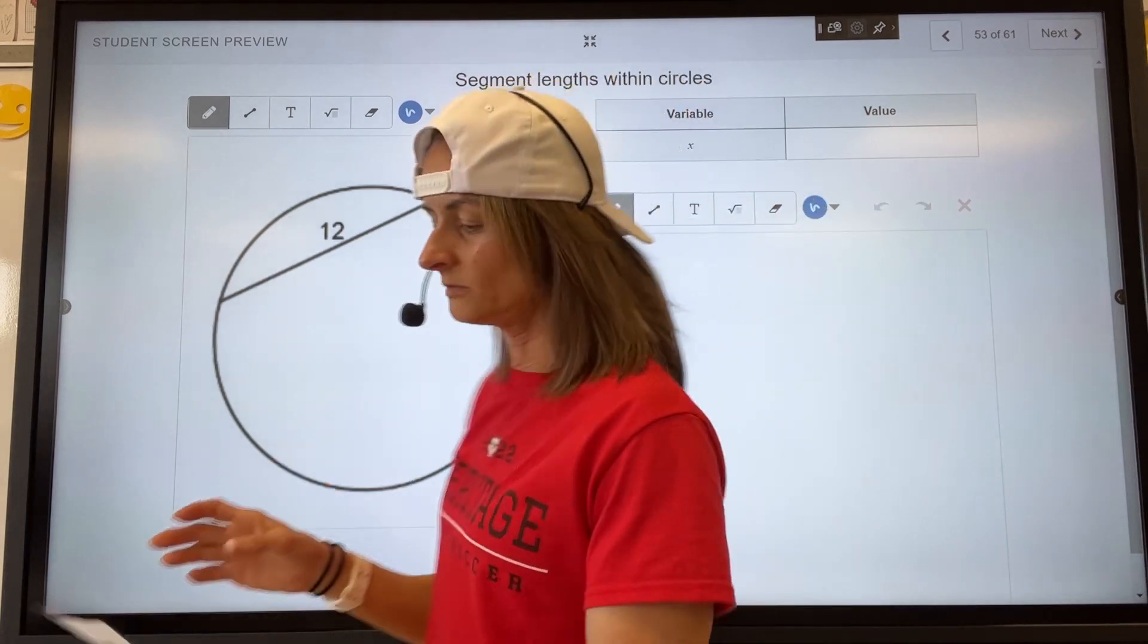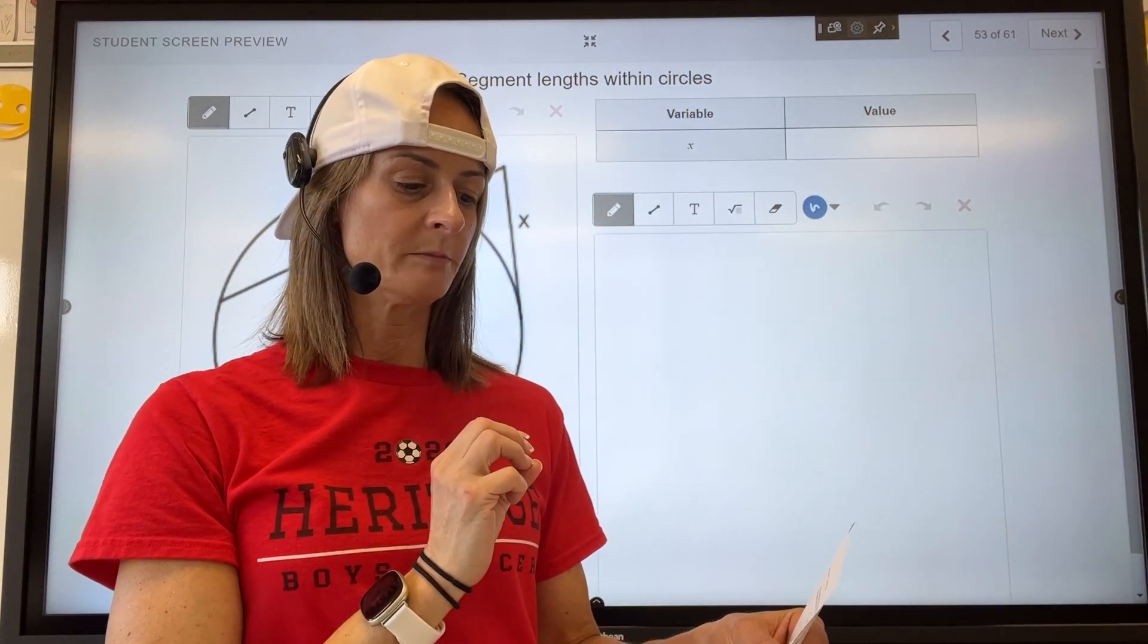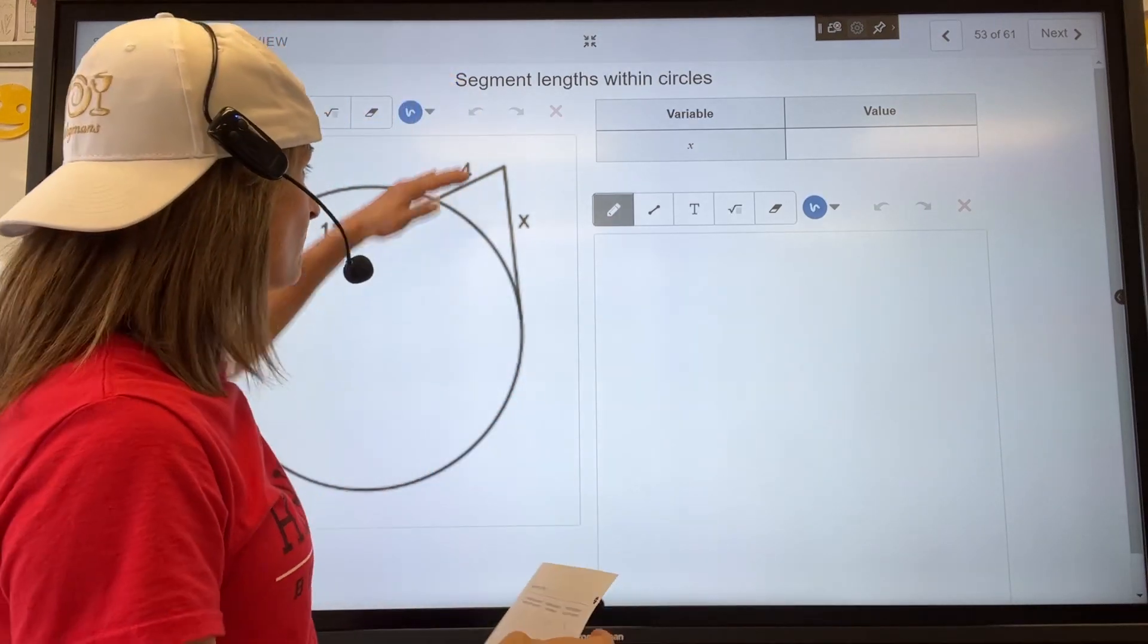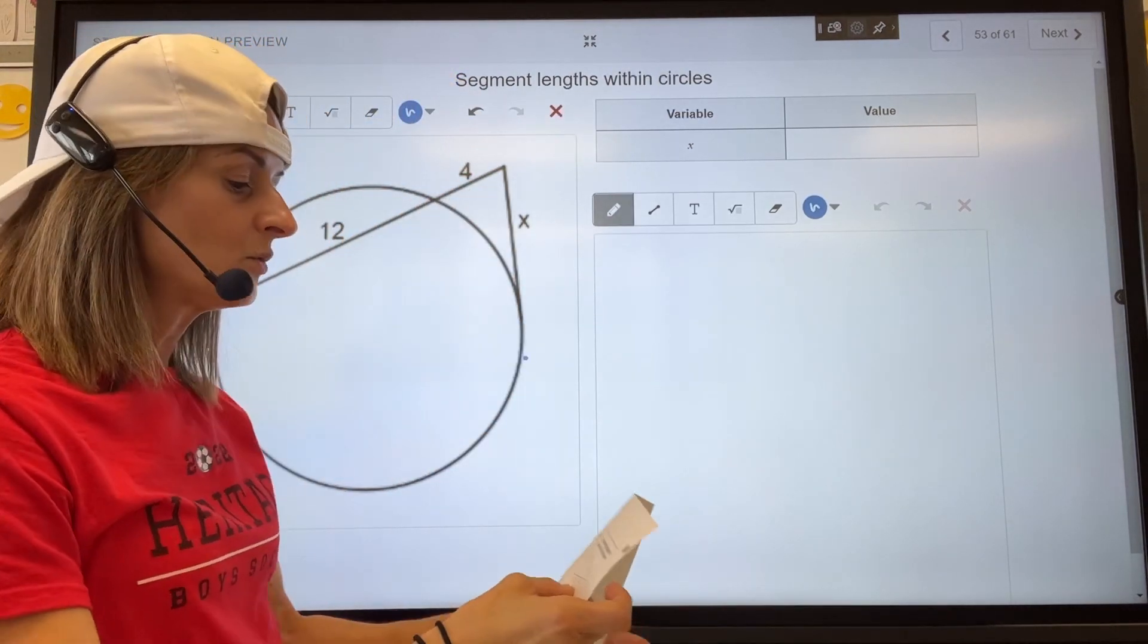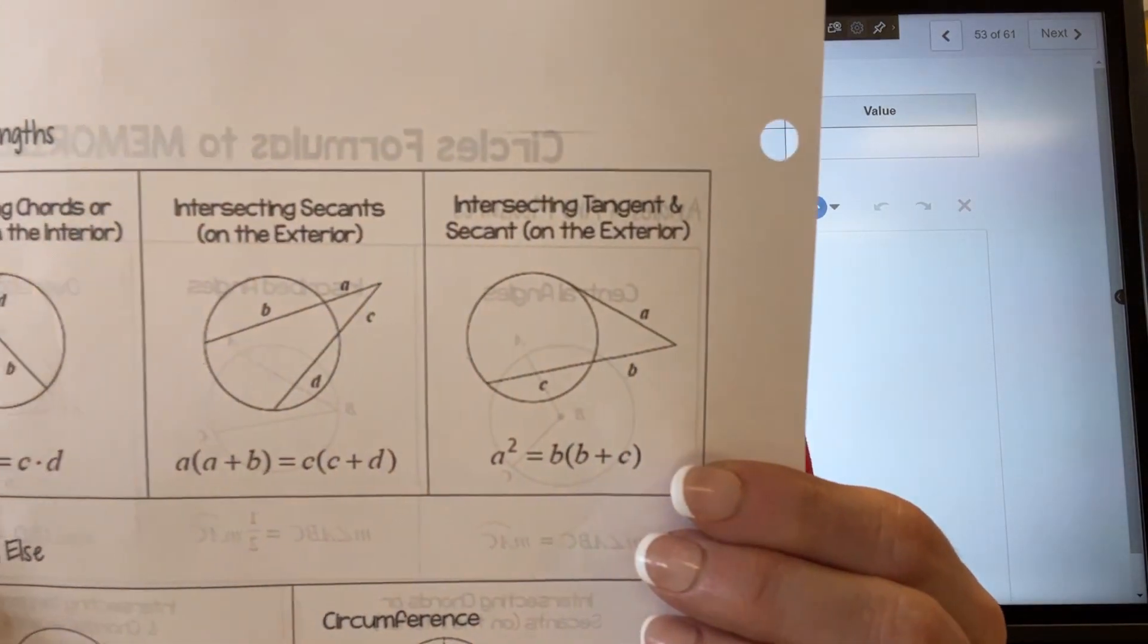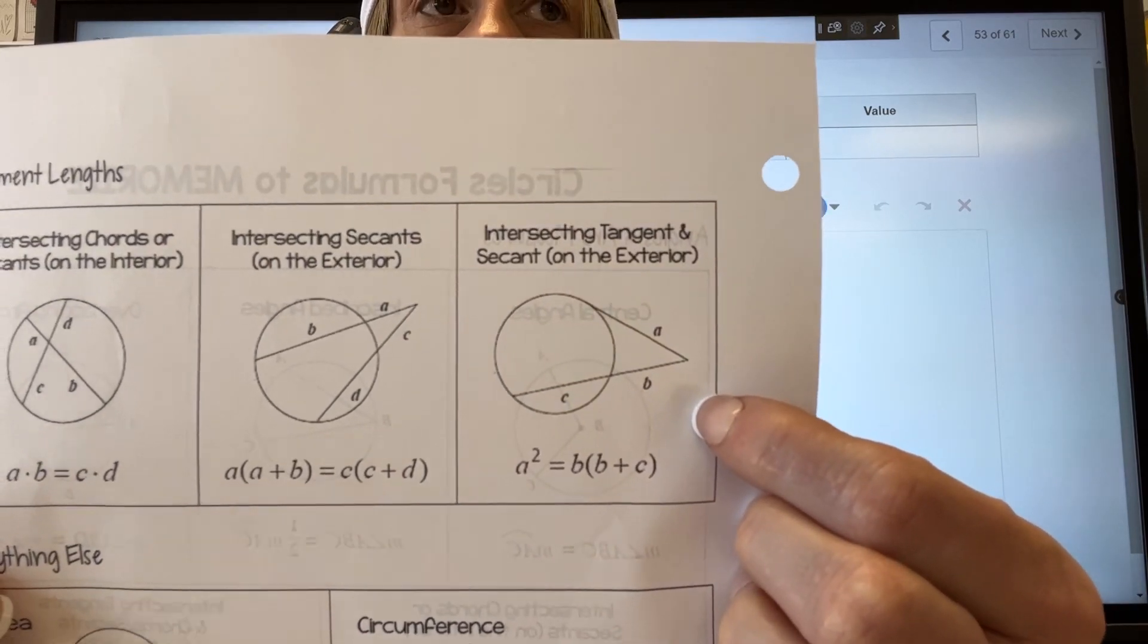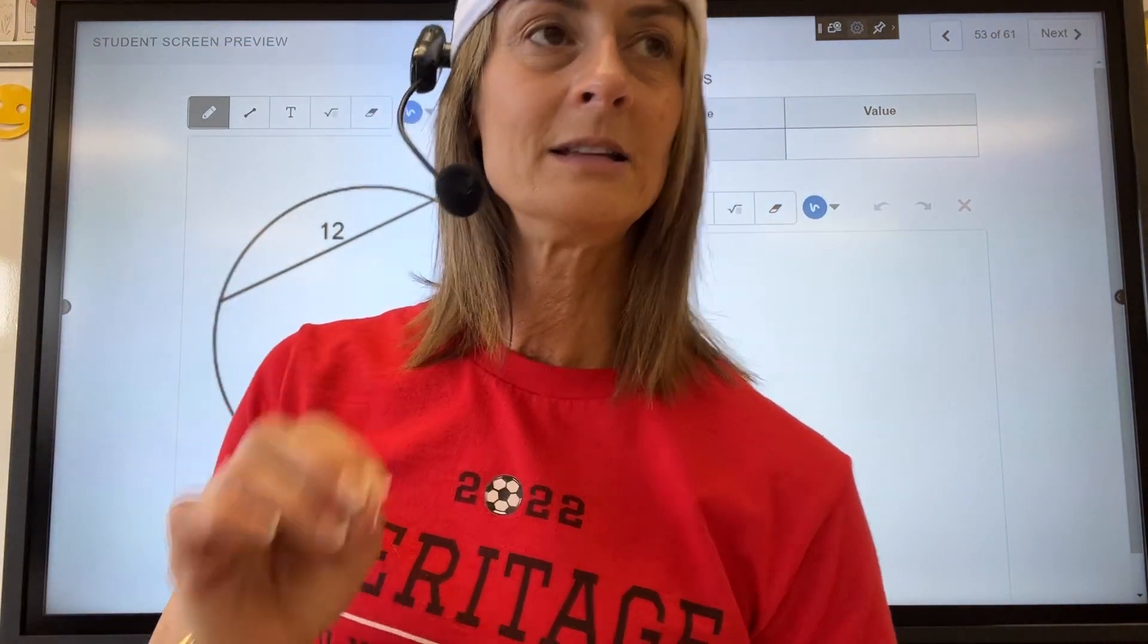This one is the exact same concept as the previous one, except for we have one secant line and one tangent line, which is to the right on the formula sheet. And the concept, I need everyone to pay attention, because it is exactly like the previous one.